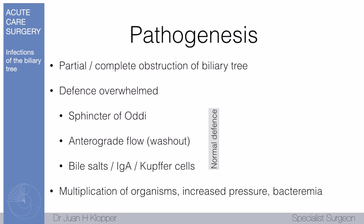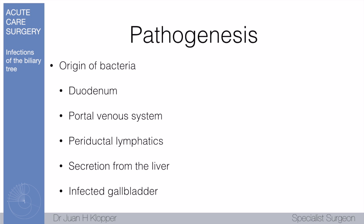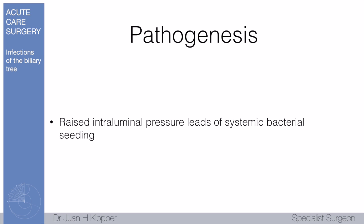These defenses get overwhelmed under various circumstances. You get multiplication of organisms, the pressure inside the biliary tree increases, and with a very good blood supply those organisms get into the bloodstream — you have bacteremia and the patient goes into septic shock. Organisms may come from the duodenum itself, the portal venous system, periductal lymphatics, secretions from the liver, or an infected gallbladder. With raised intraluminal pressure it leads to systemic bacterial seeding, bacteremia, septicemia, and septic shock.